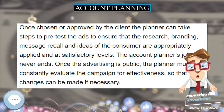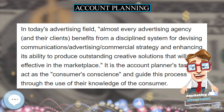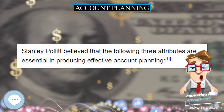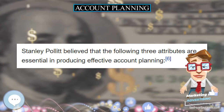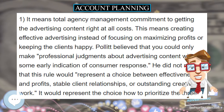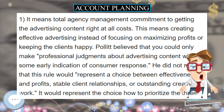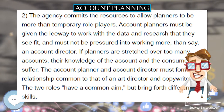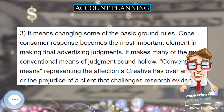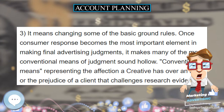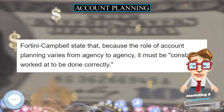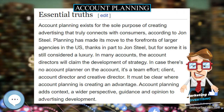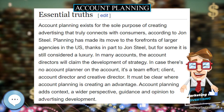The first agency in the United States to develop an account planning department was Chiat/Day, now TBWA/Chiat/Day. Jay Chiat took notice of the new department being met with success in the UK and throughout Europe. Chiat believed that account planning was crucial to creative work and also believed at the time that British creative work was far better than American work. He was not a fan of typical market research, stating that it is about what has already been done — planning is about discovering new things.